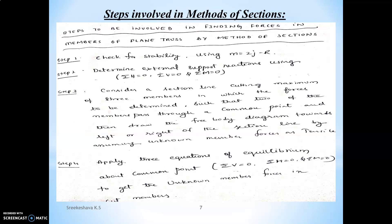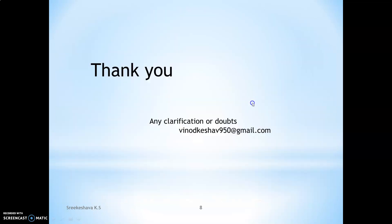To summarize: in the method of joints, consider each joint where the maximum unknown members are two. In the method of sections, cut the truss into two parts where the maximum unknown members are three. Keep these key conditions in mind. In the next classes we will discuss numerical problems, which will make these concepts clearer. Please take notes and feel free to ask any doubts. Thank you.